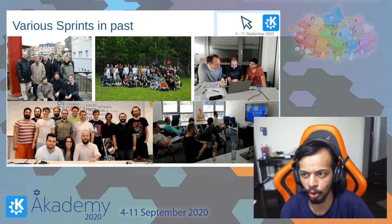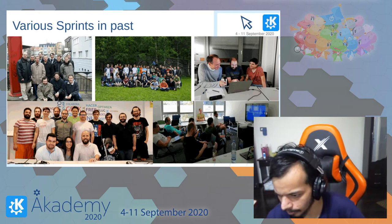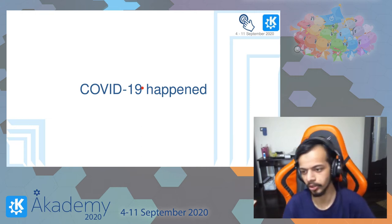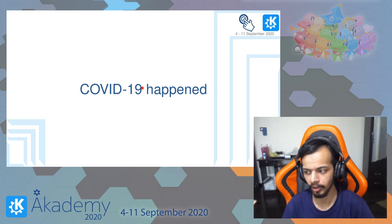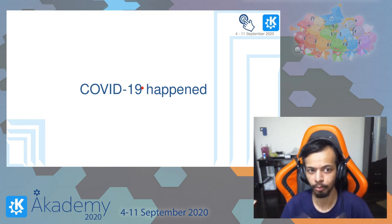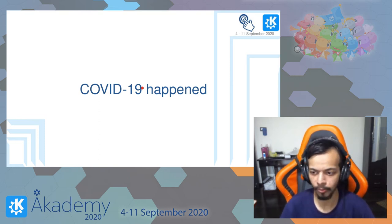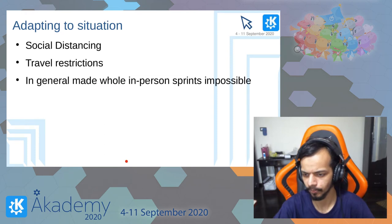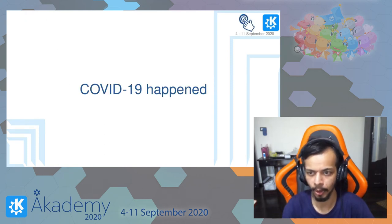These sprints served us well for many years, but this year the main problem affecting all sprints and in-person events is COVID-19. Due to that, in-person meetings were no longer feasible — it was no longer possible to have five to ten people get together, and for people living outside of Europe it wasn't even possible to travel. So the question became: how do we adapt?